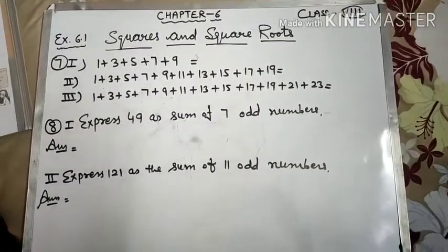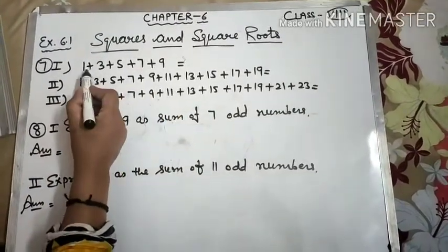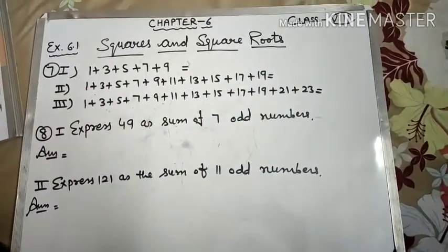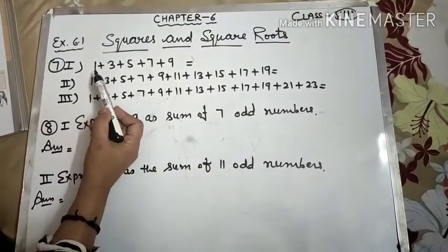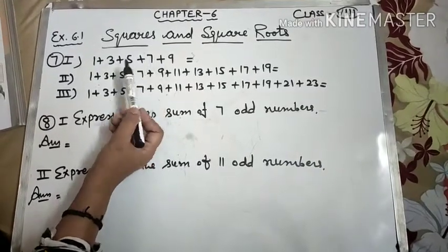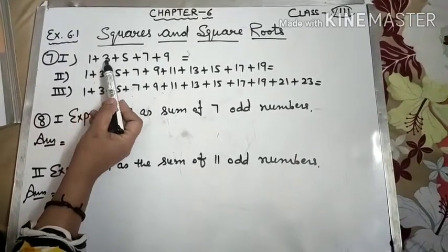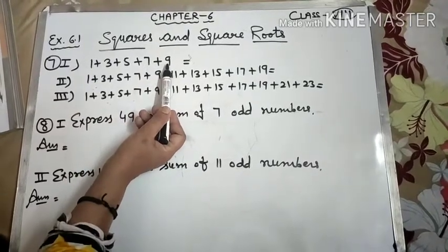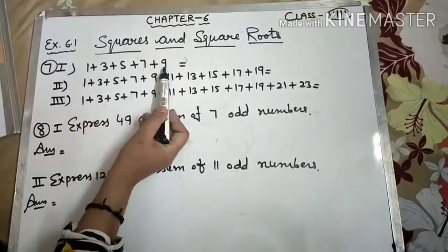Now question 7: without adding, find the sum. Without adding, we have to tell the sum that if we want to add them, our answer will be fine, but we don't do actual addition. First, we need to check that these numbers are odd and consecutive, means there is no term missing. 1 is an odd number, next is 3, then 5, 7, 9. There is no break, no gap, no term missing, all are odd numbers.